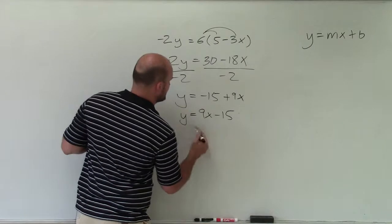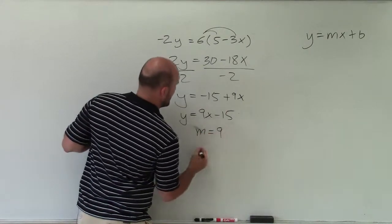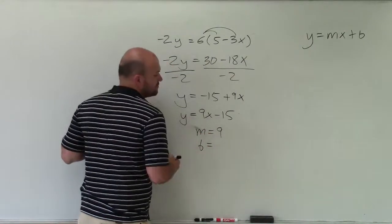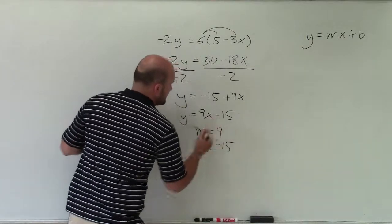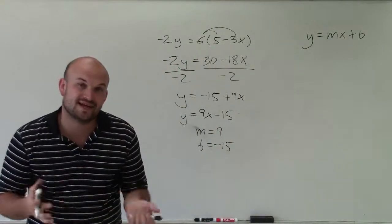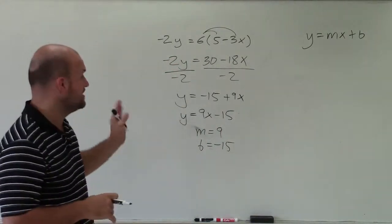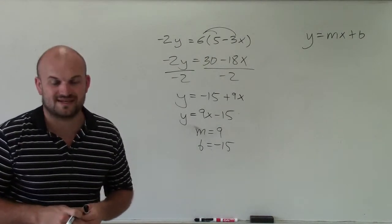Where now my slope, which we represent as m, is 9, and my y-intercept, which is b, is negative 15. So there you go, ladies and gentlemen. That is how you determine the slope and the y-intercept by writing an equation in slope-intercept form. Thanks.